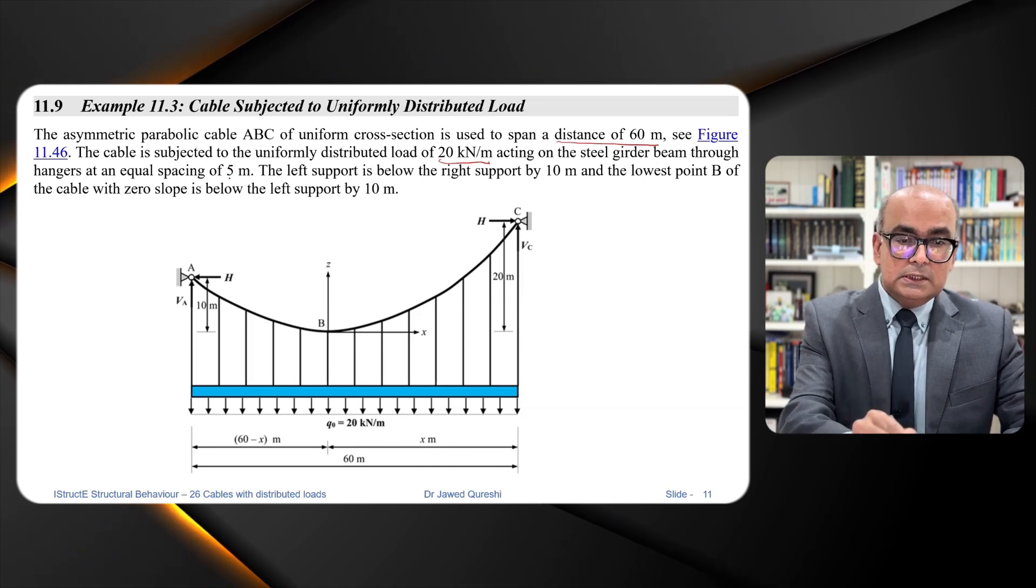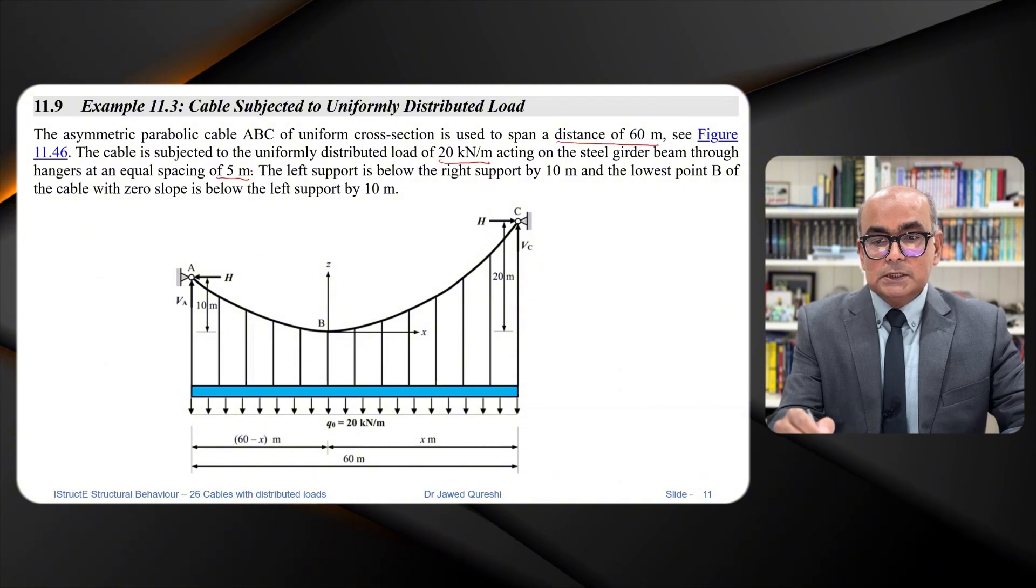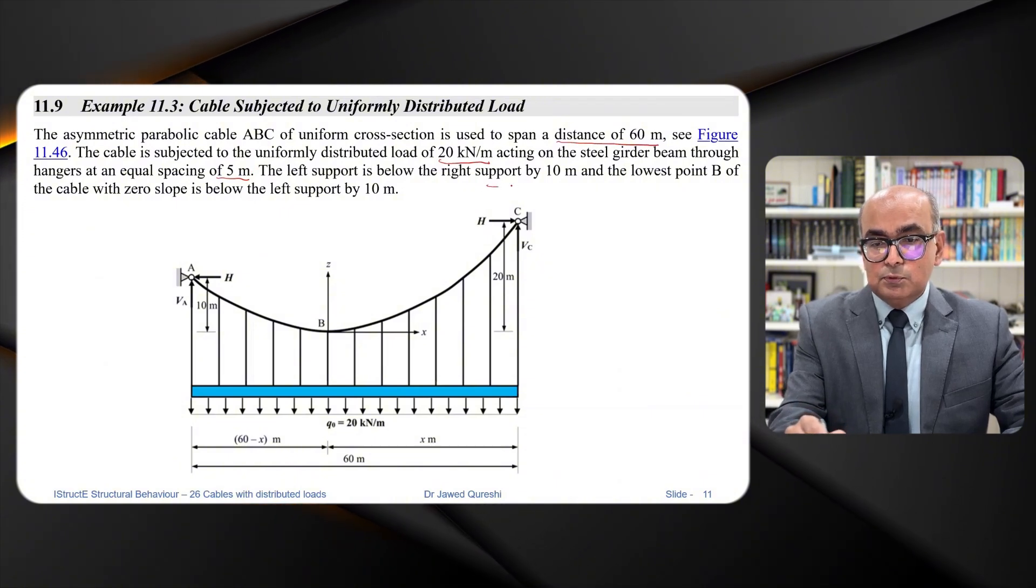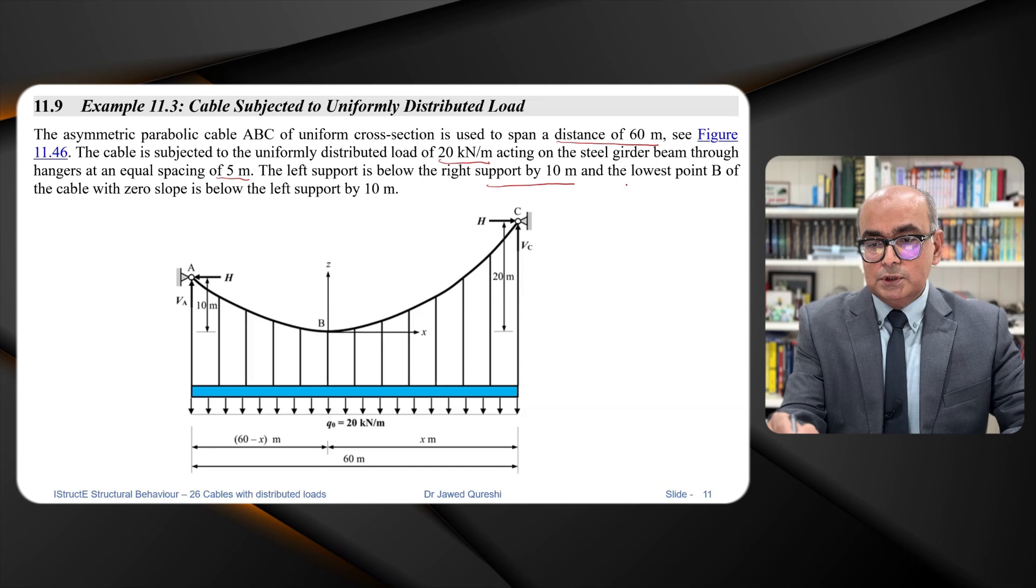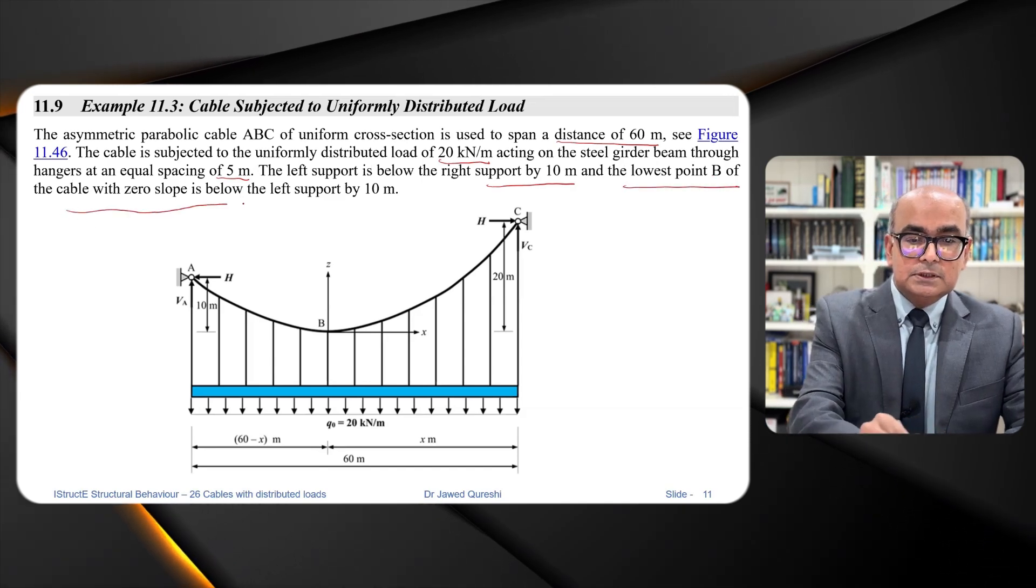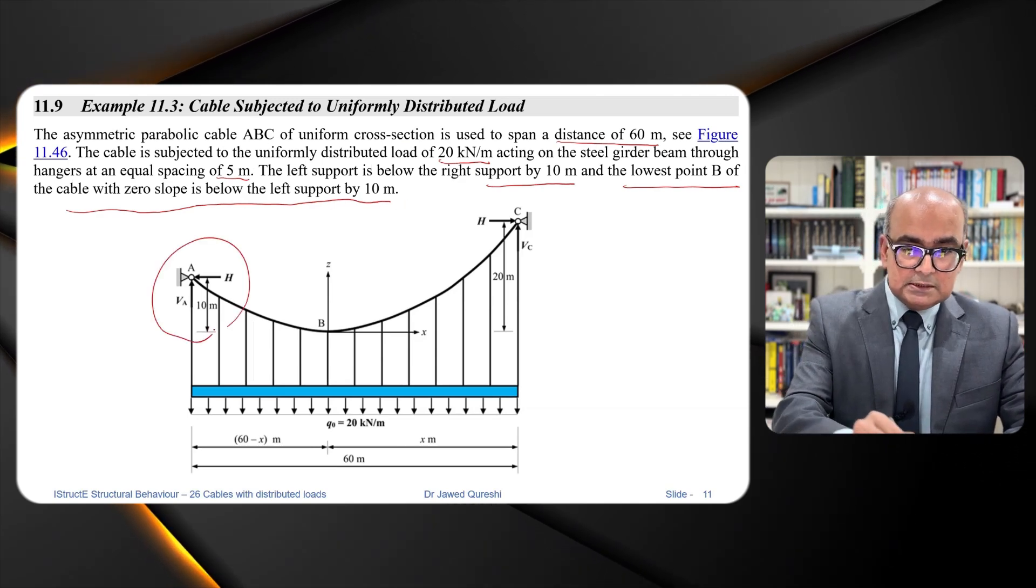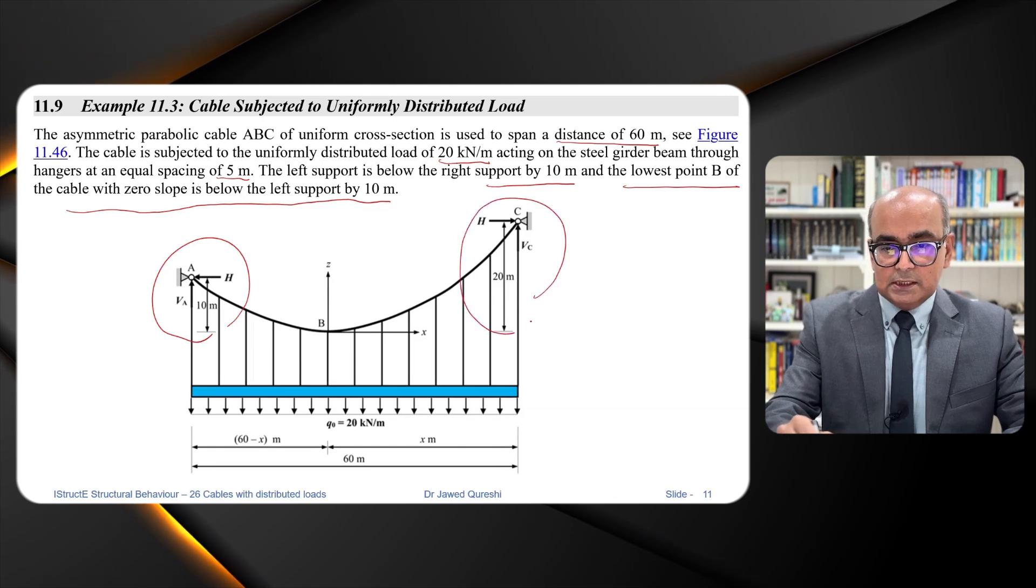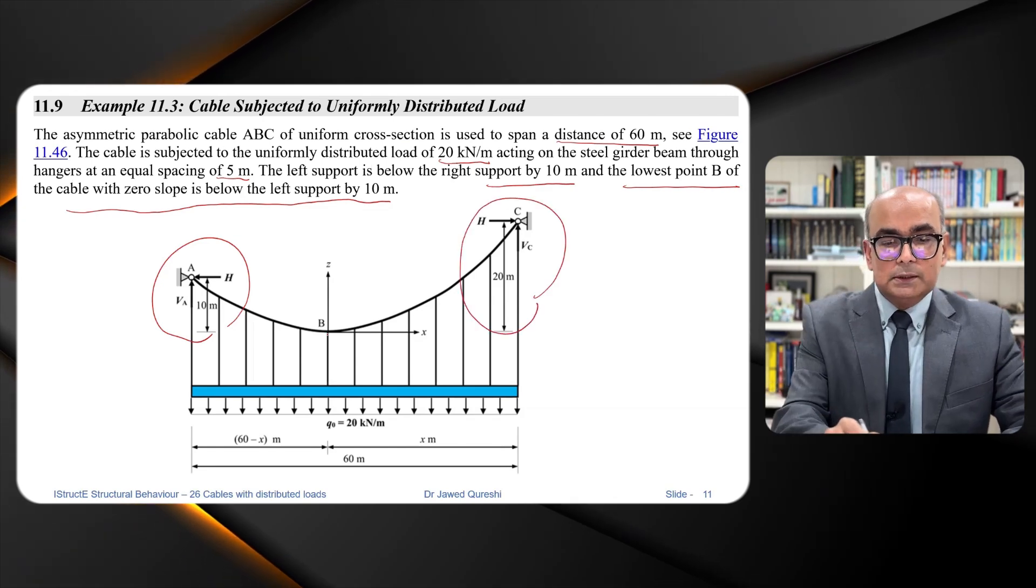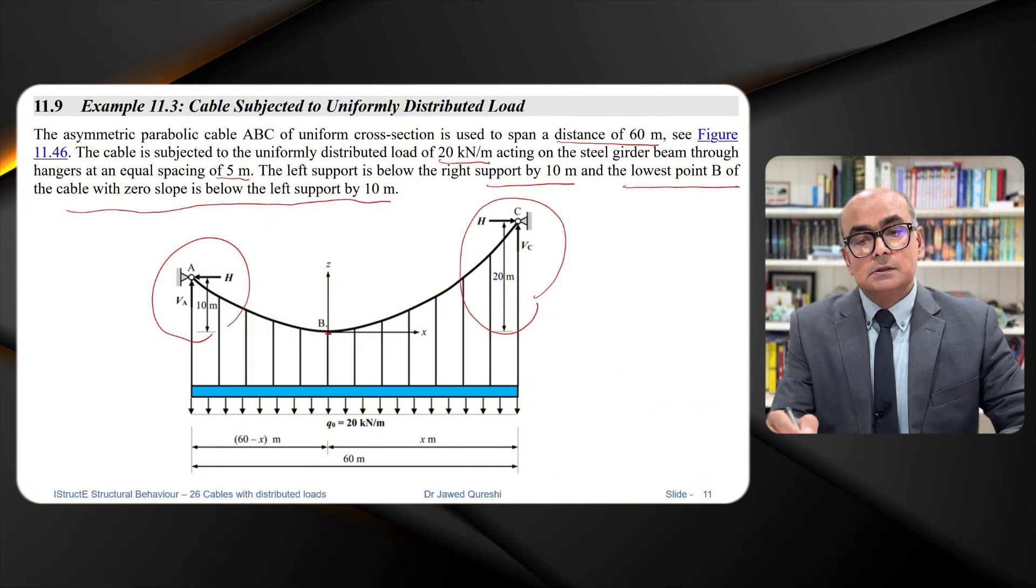And the cable is subjected to uniformly distributed load of 20 kilonewton per meter acting on the steel girder beam through the hangers with equal spacing of five meters. The left support is below the right left support by 10 meters and the lowest point of B of the cable with the zero slope is below left support by 10 meters. So this side is 10 meters below and this side is 20 meters below.